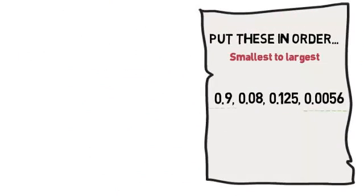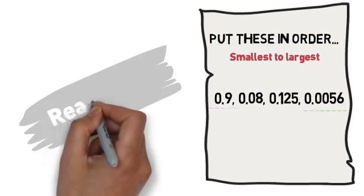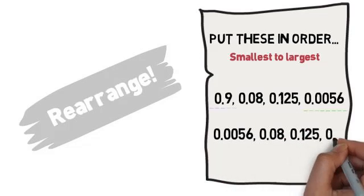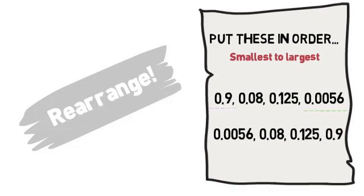So if we were to rearrange the group of numbers we were given, from smallest to largest, it would read as 0.0056, 0.08, 0.125, 0.9.